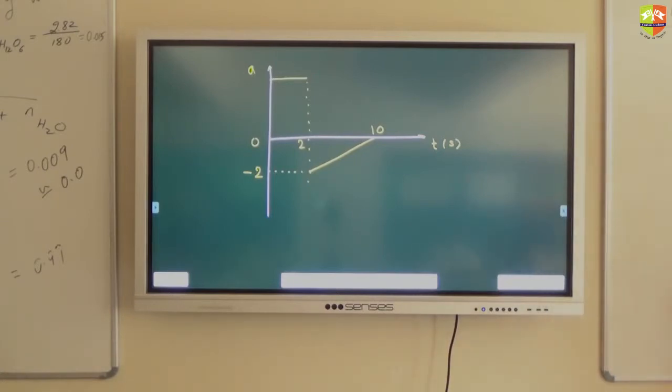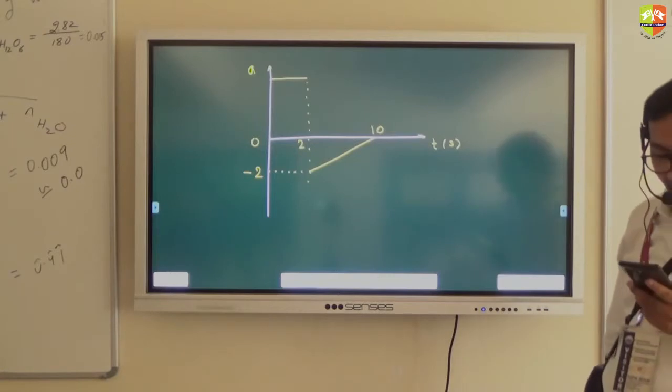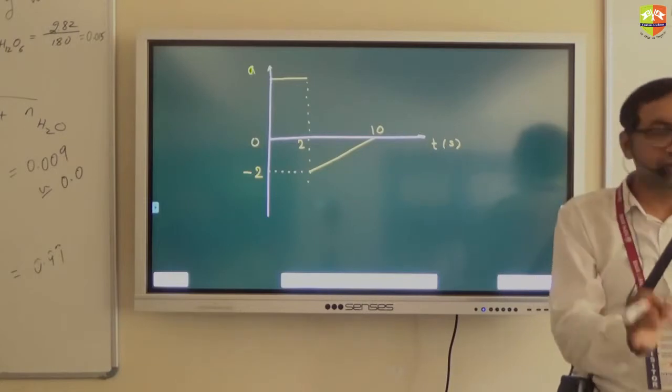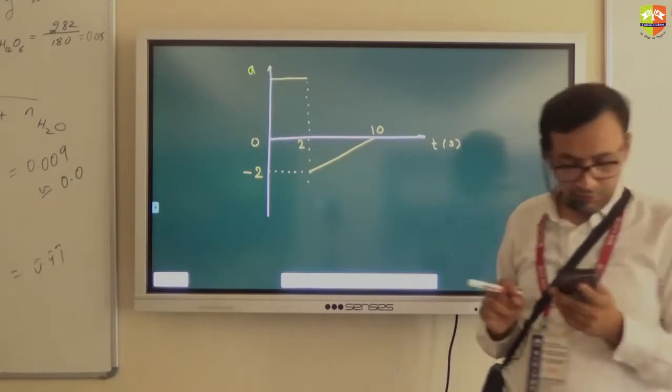Done? Should I ask the question now? Particle moves in a straight line with acceleration as shown in the figure. The initial displacement and velocity are 0. Initial displacement is 0 and initial velocity is 0. Both are 0. Okay?